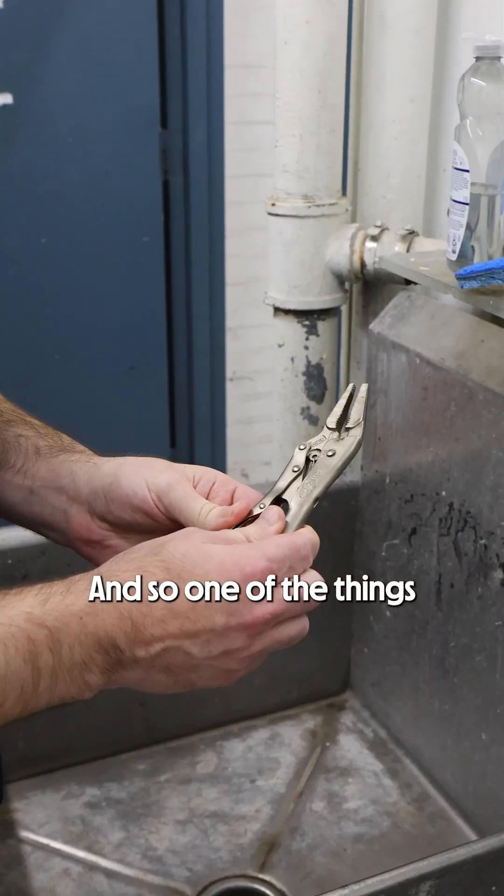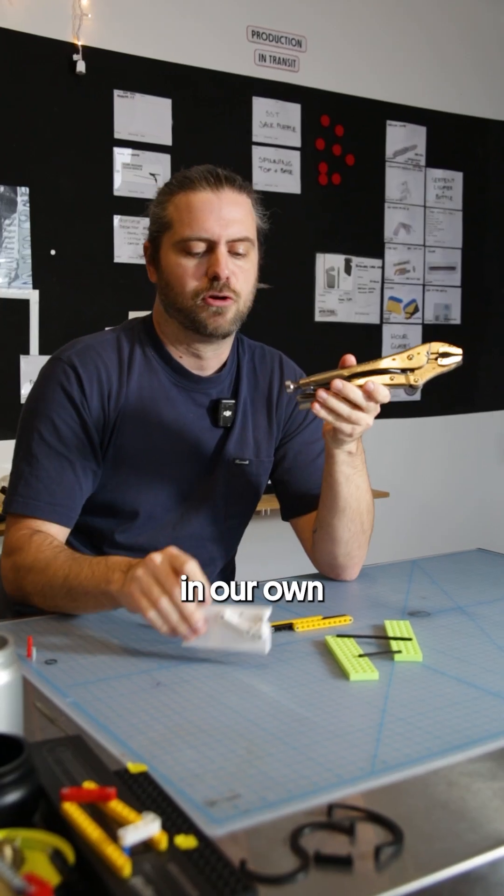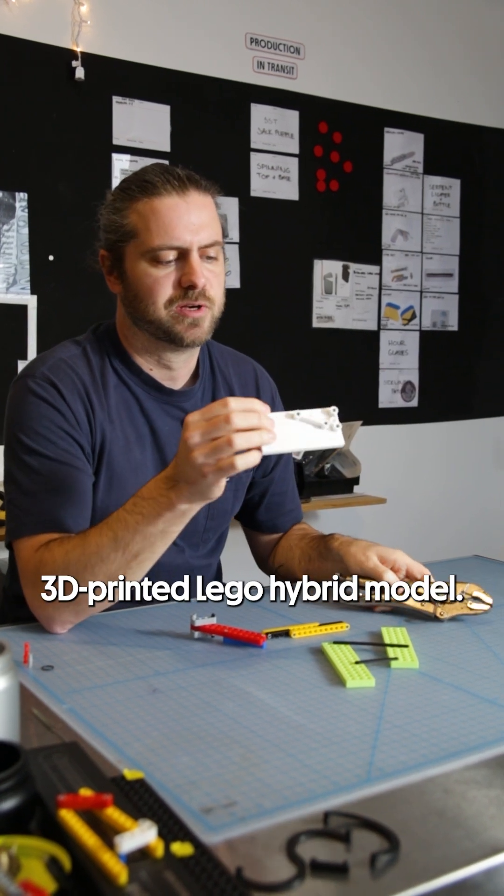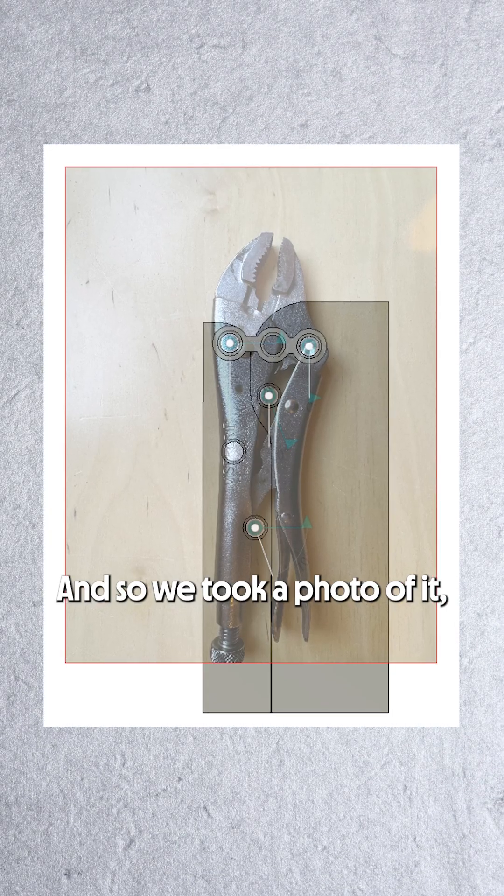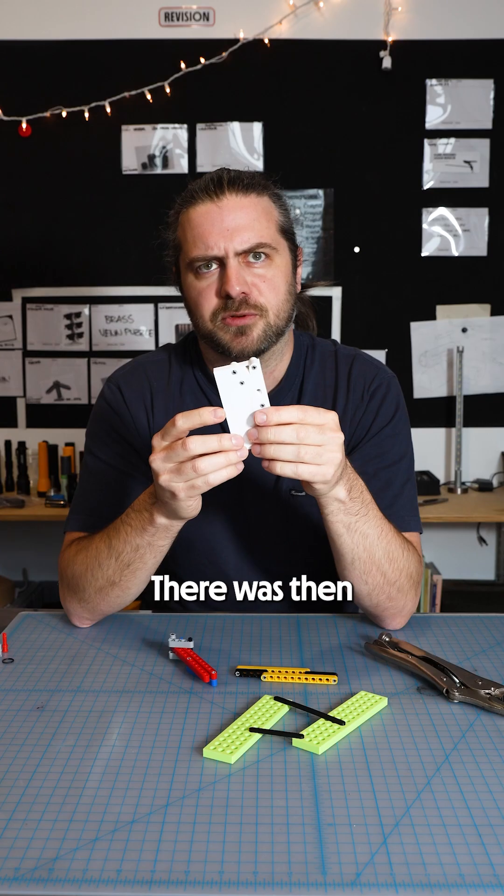So one of the things I decided to do is let's just see if we can replicate this exact geometry in our own 3D printed lego hybrid model. And so we took a photo of it, dropped it into CAD and traced those four points onto this assembly.